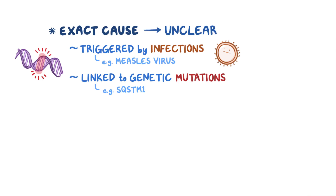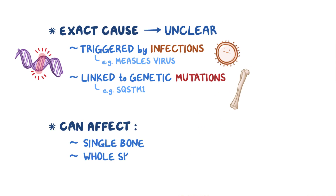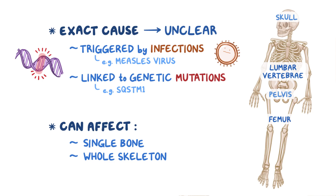When Paget's disease of bone occurs, it can affect a single bone or the whole skeletal system. Most often, it involves the skull, lumbar vertebrae, the pelvis, and the femur.